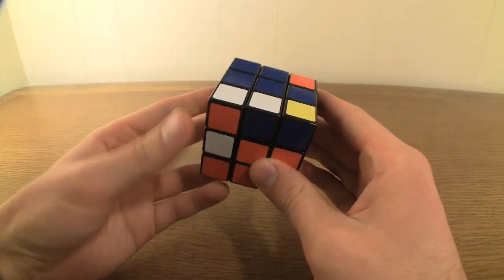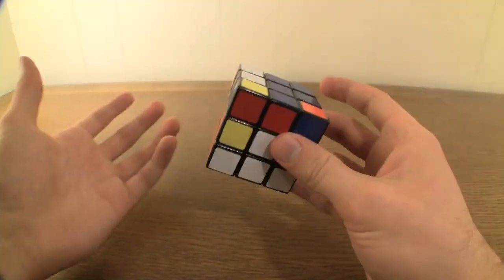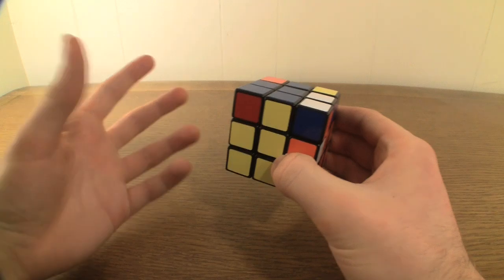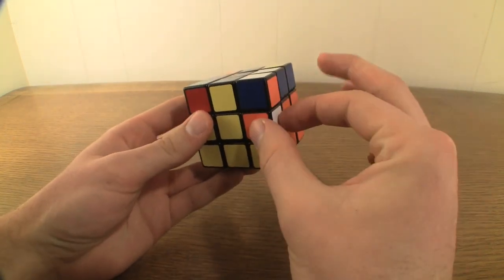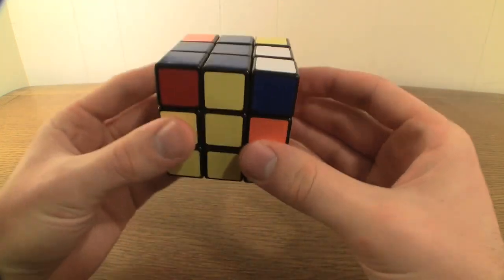Now sometimes you'll encounter a situation where all of the top layer edge pieces have blue in them before the second layer is complete. To fix this, find an unsolved second layer edge piece without blue in it, and hold the cube so that this piece is in the center right of the front face...